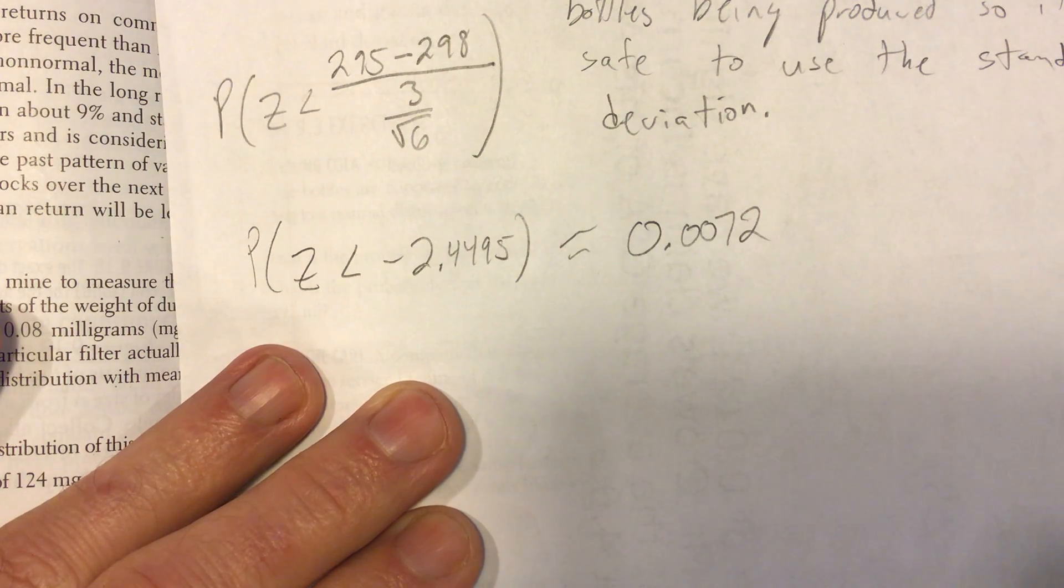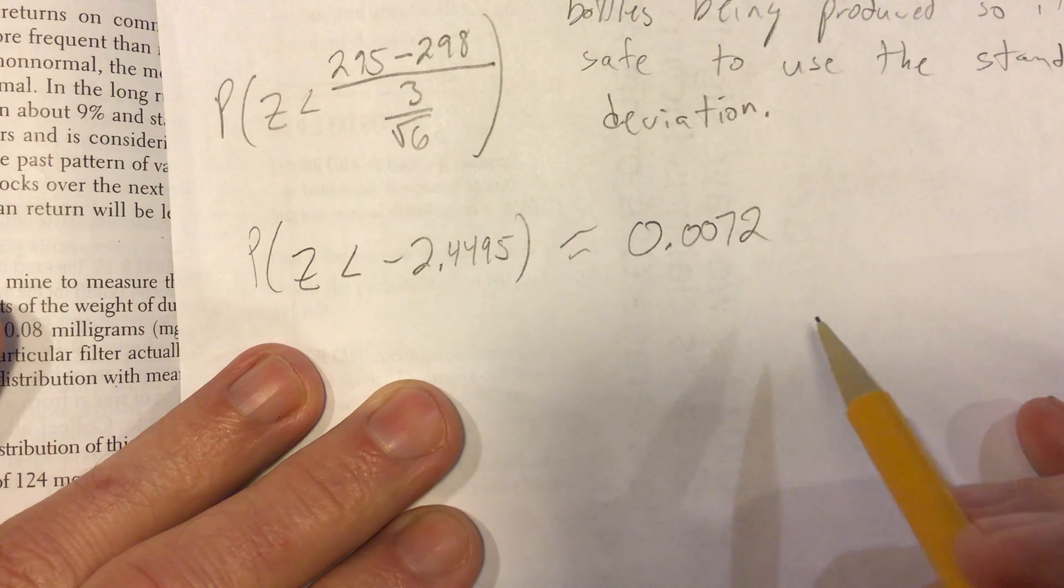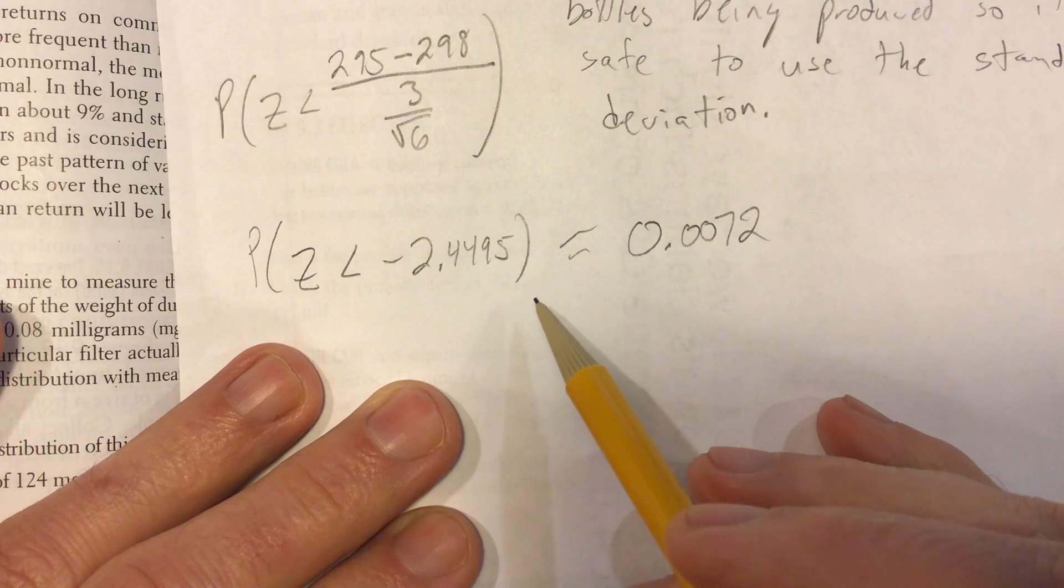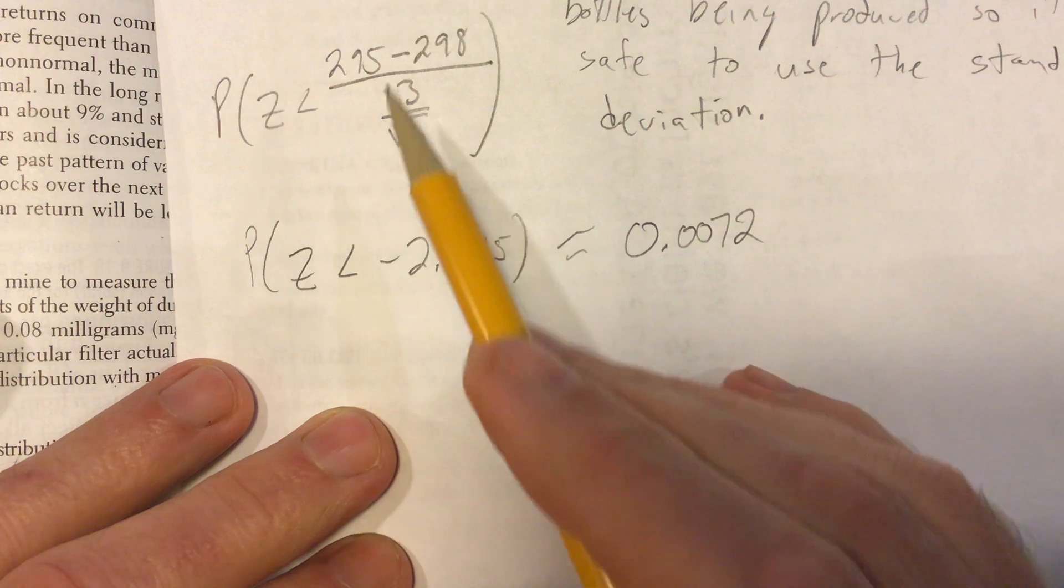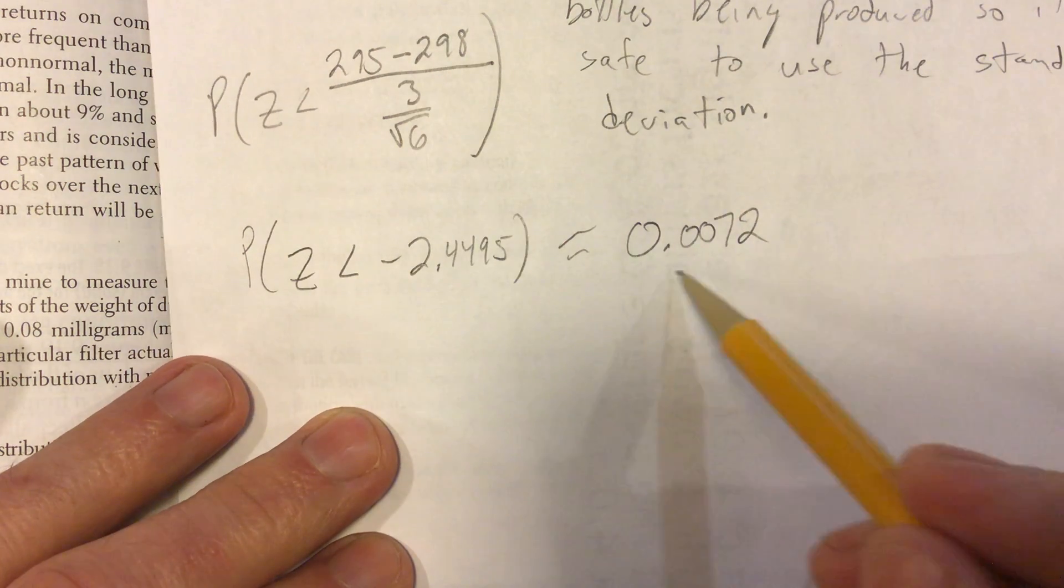By the way, we really should write a complete sentence answer here, right? The probability that the mean contents for the six-pack is less than 295 milliliters is that.